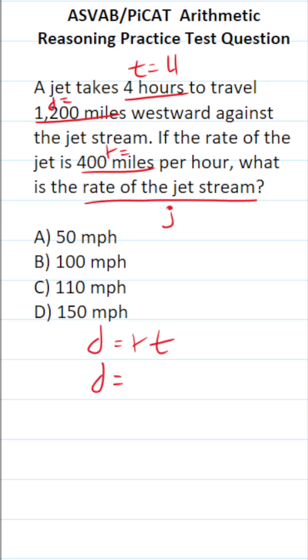The jet stream will affect the rate at which the jet is flying. In this case, the jet is flying against the jet stream, so the jet stream will slow the jet down. I'm going to express that algebraically as R minus J, and that's times time.